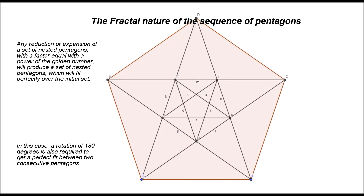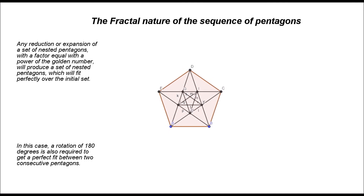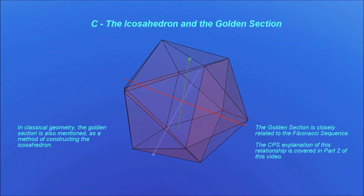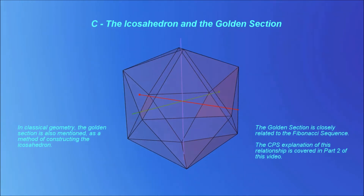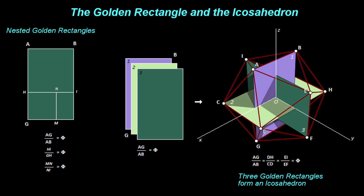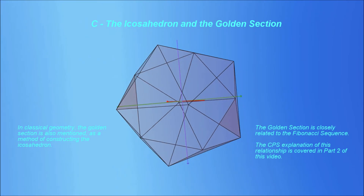As seen before, any reduction or expansion of a set of nested pentagons with a factor equal with the power of the golden number will produce a set of nested pentagons which will fit perfectly over the initial set. In classical geometry, the golden section is also mentioned as a method of constructing the icosahedron. A golden rectangle is a rectangle for which the ratio between the longer and shorter side is equal with the golden number. This rectangle has the property that if we construct a square on the smaller side, the smaller rectangle formed is also a golden rectangle, similar with the initial rectangle. Also, in some very amazing and unexpected way, we can observe that the vertices of three orthogonal golden rectangles form the vertices of the icosahedron. The golden section is closely related to the Fibonacci sequence.